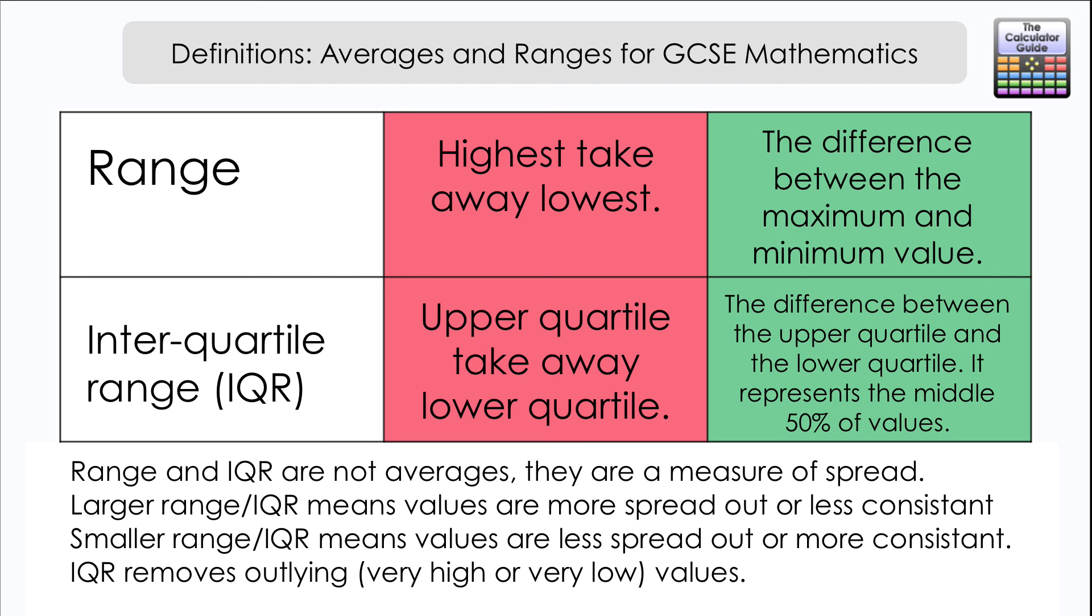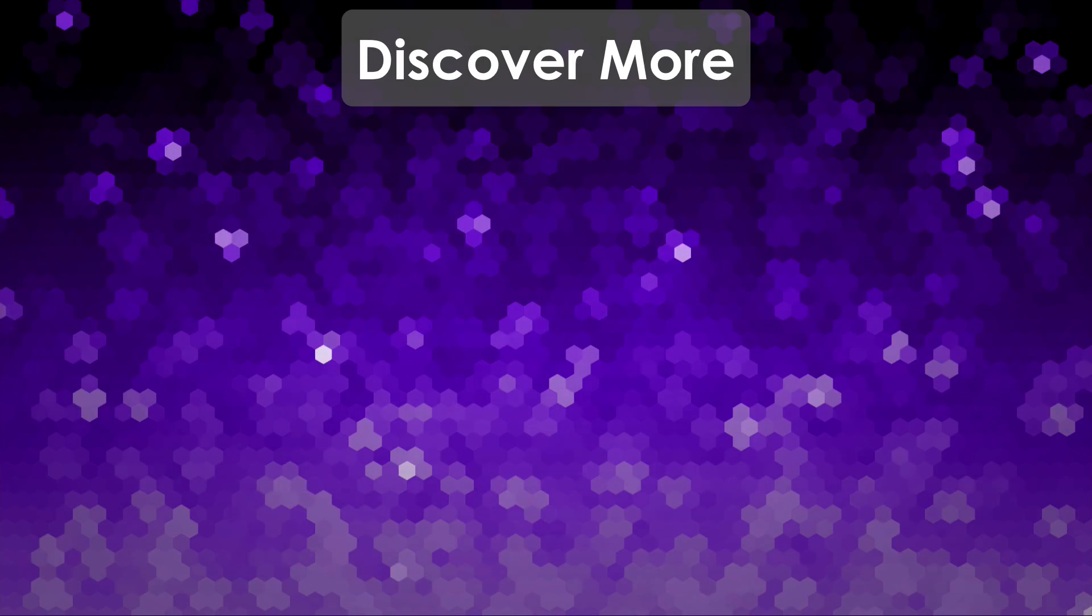Typically you perhaps compare the average, maybe the mean, and then the range. We can talk about which is higher or lower on average, which is more or less consistent.